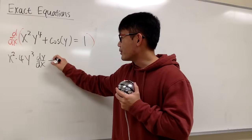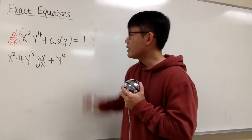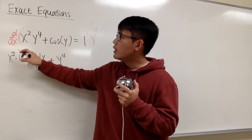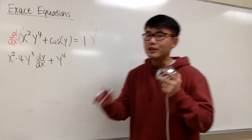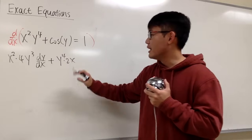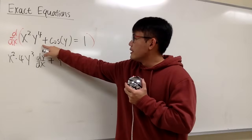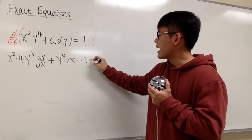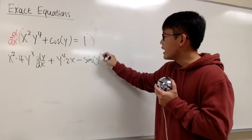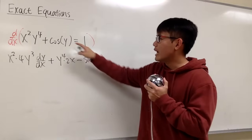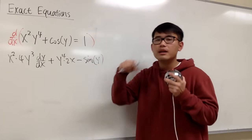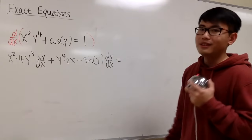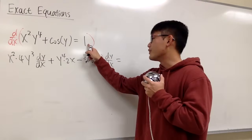And we will continue with the product rule. We add the second function, which is y to the fourth power, and we multiply by the derivative of x squared. The derivative of x squared with respect to x is simply just 2x. Now differentiate cosine y. The derivative of cosine is negative sine, so let me put down negative sine. The input stays the same. The chain rule says we have to multiply by the derivative of the inside. The derivative of y is dy/dx. At the end, this is equal to 0 because the derivative of 1 is 0.